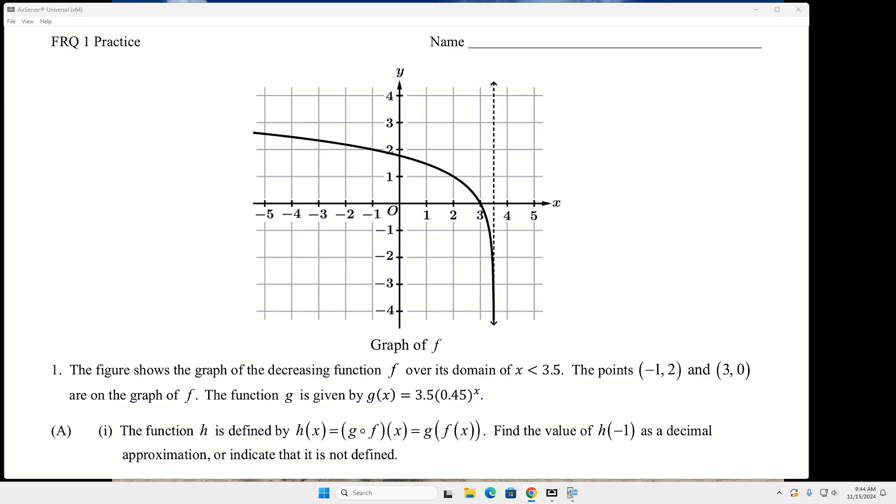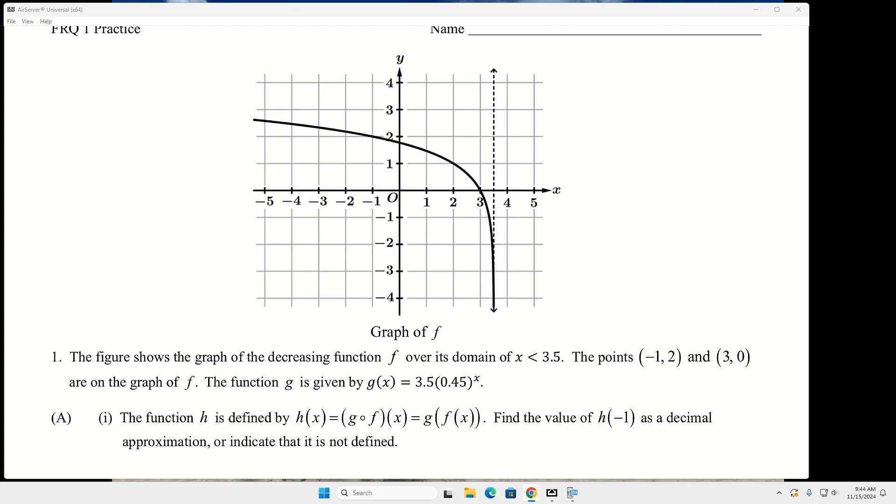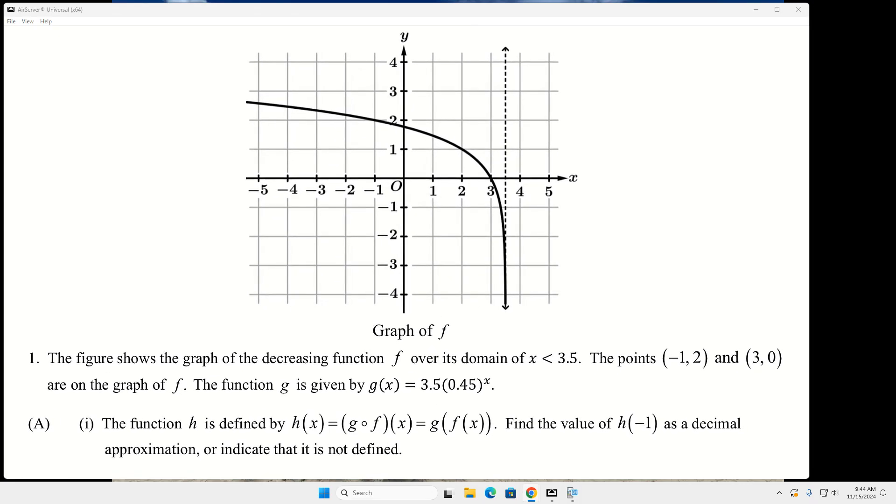The other way they could ask this question is asking if that function - they'll give you the graph or maybe the table. And then instead of that, they'll ask is that function invertible. And so that's the new thing. You'll always be given one function in table form or graph form, and then one function in algebraic form.